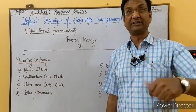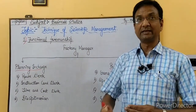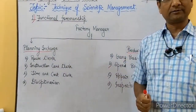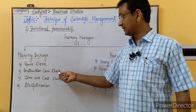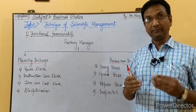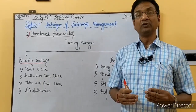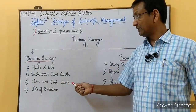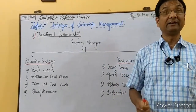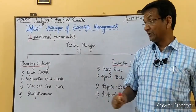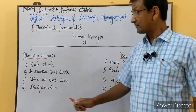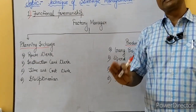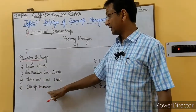The route clerk states the sequence of operations. The instruction card clerk gives instructions for carrying out the work. The third role is the time and cost clerk, who monitors time and costs involved in production planning.